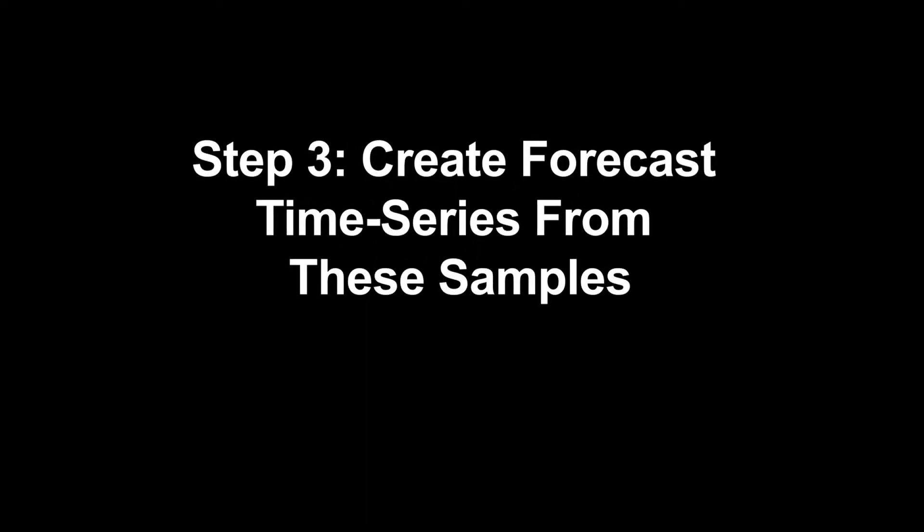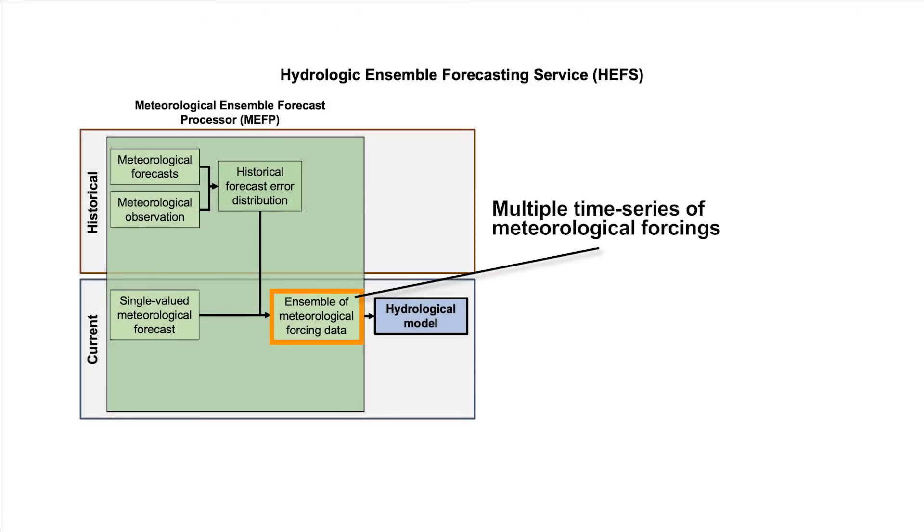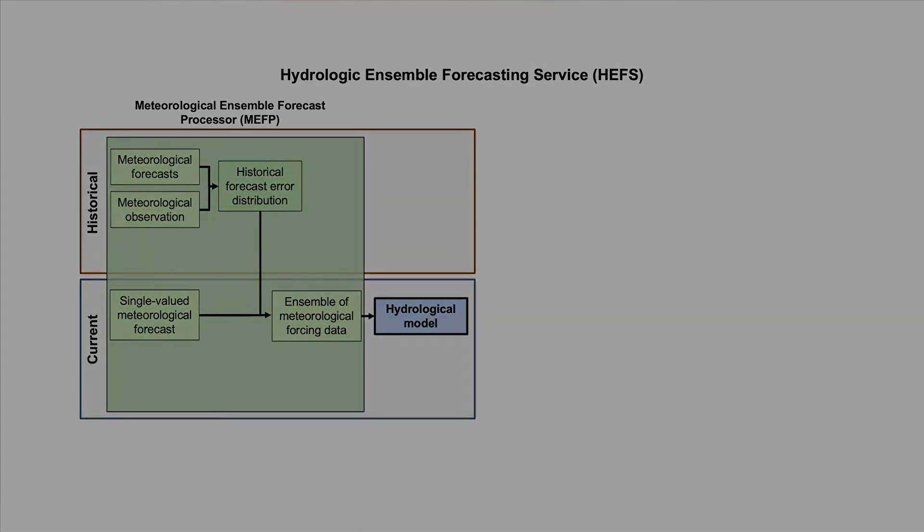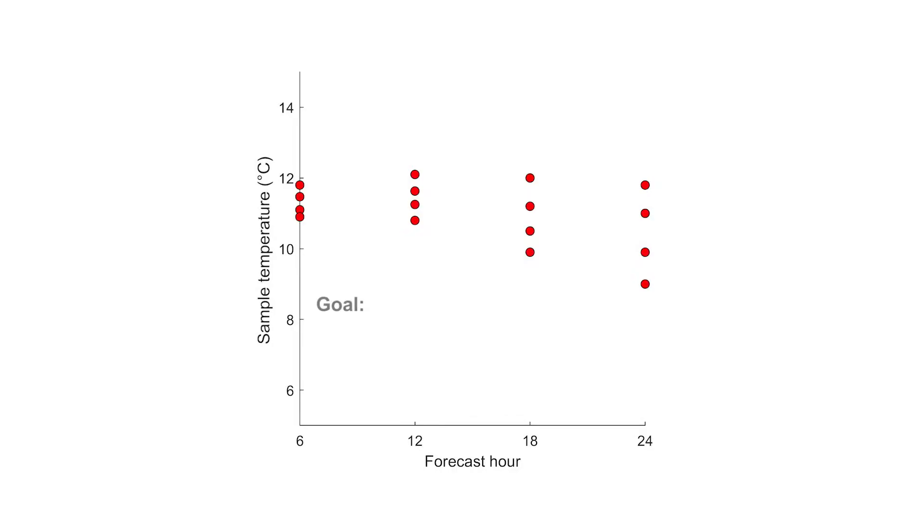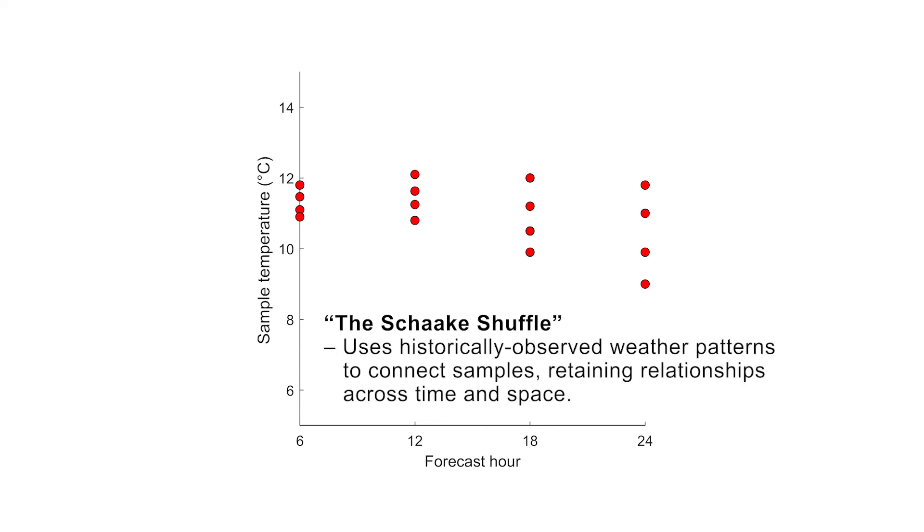Next, we need to connect these samples in time to provide multiple time series of meteorological forcings for the hydrological models. Our goal is to do this in such a way that we retain the relationships across time and space, as well as with other variables such as precipitation. To do this, MEFP uses a process called the Schaake shuffle. This uses historically observed weather patterns as a guide to connect the samples.